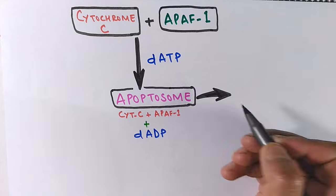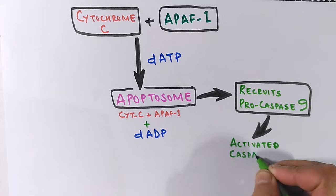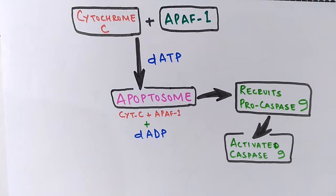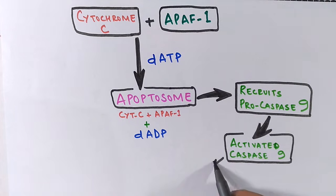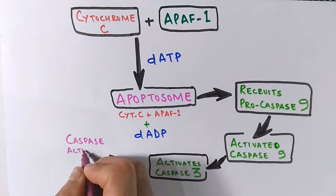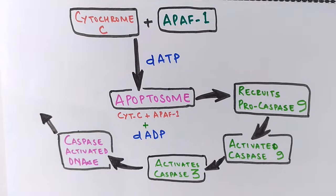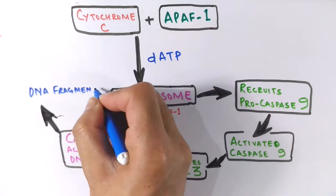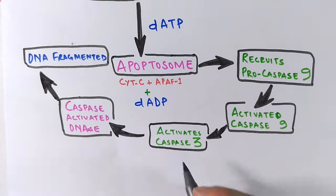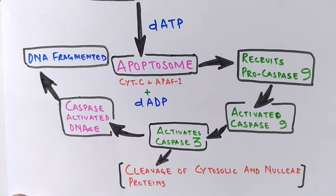The apoptosome then acts on pro-caspase 9 and converts it into its active form, caspase 9. From that point, the execution step of apoptosis starts, where the caspase cascade begins. Caspase 9 activates caspase 3, which acts as an endonuclease and also activates caspase-dependent DNase within the nucleus. The activated DNase then fragments the DNA.